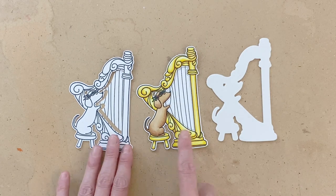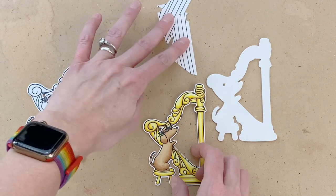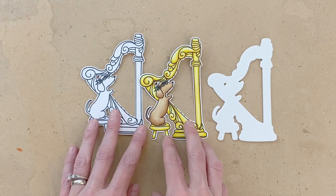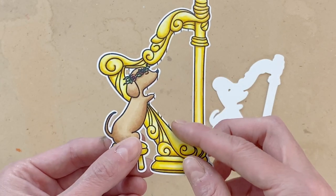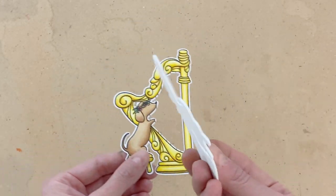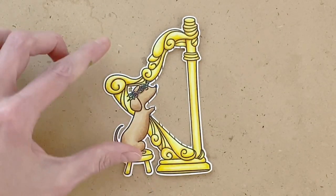Now that my copic coloring is done I went ahead and die cut out the two stamped harps and puppies with the matching die. As you can see, the die cuts out the string section of the harp which is actually perfect for today's project. I also die cut out of white craft foam that same dog and harp and I'll use that later for some dimension.